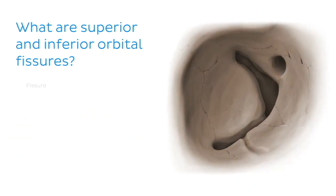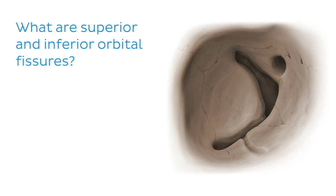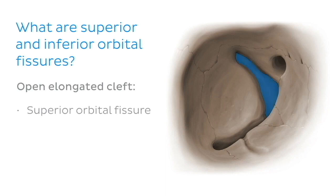A fissure, on the other hand, is just another term used to describe a groove or a cleft. In this case, they are open and serve as passageways for other structures. In this image, we've zoomed in for a closer look at the right orbit. At its posterior aspect are two open elongated clefts: the superior orbital fissure and the inferior orbital fissure.